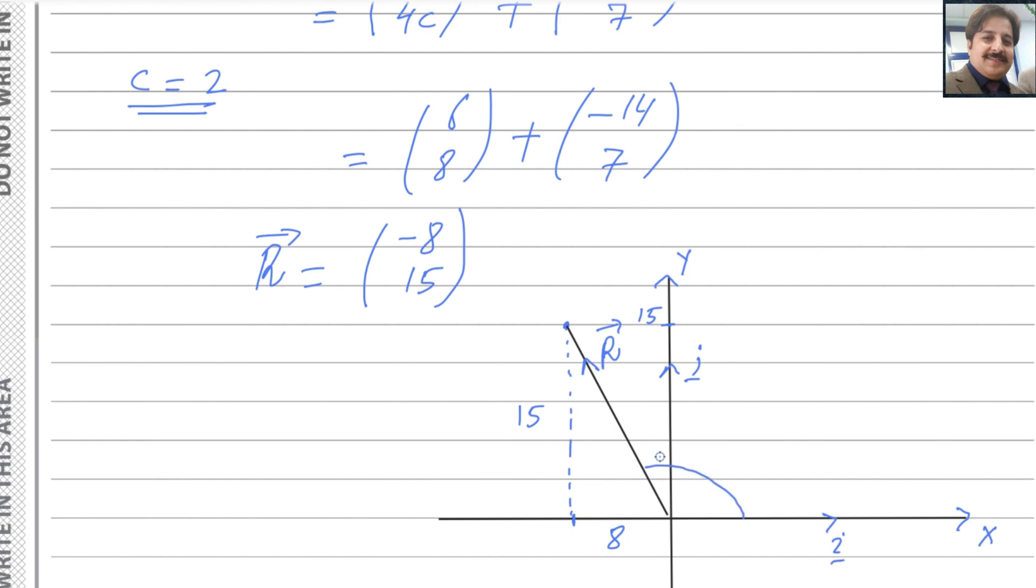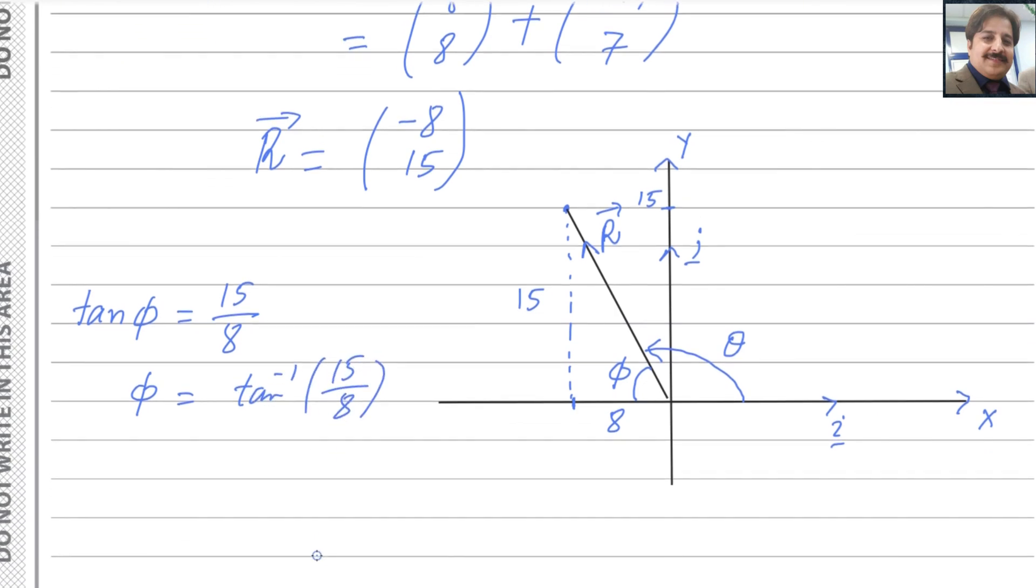We need to find the angle made by R with i. This is the required angle. You can find this angle, let's say this angle is theta and this angle is phi. You could find the angle phi: tan phi is equals to opposite over adjacent, 15 over 8. Phi could be found by taking tan inverse 15 over 8. That will be equals to 61.9 degrees. What is the angle theta? 180 minus 61.9 degrees, you will get the answer as 118.1 degrees.